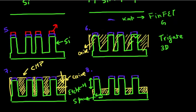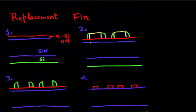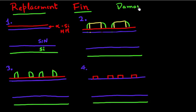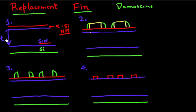This is not the only process you can use to make a FinFET device. Another process is the replacement FinFET process — you could also call it a Damascene kind of process — where you have a mold and you use that mold to define your fin. Again the process starts with your hard mask. You have a nitride layer — in this case a thicker nitride layer compared to the subtractive fin flow.